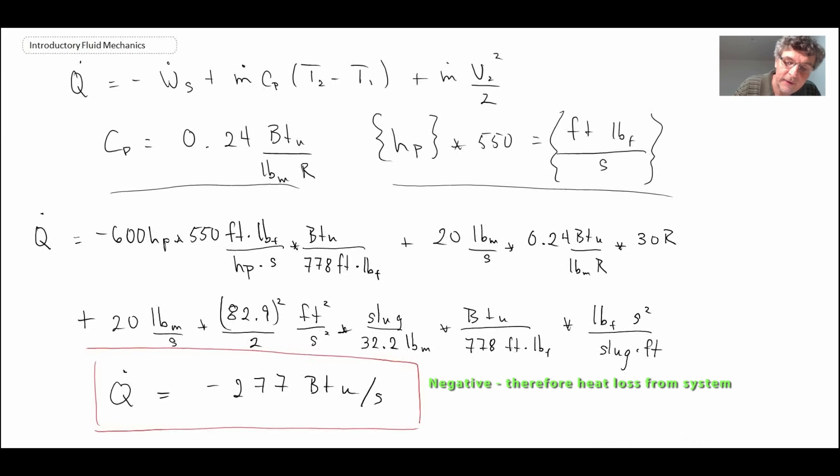And so that would be a case where we have heat loss or heat rejection from our system. So with that, that concludes the example problem of looking at applying the control volume to the first law of thermodynamics or the energy equation.